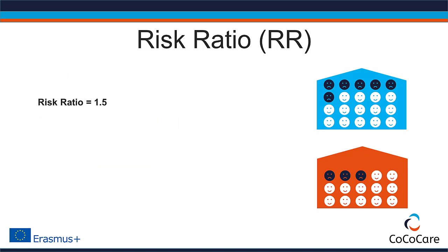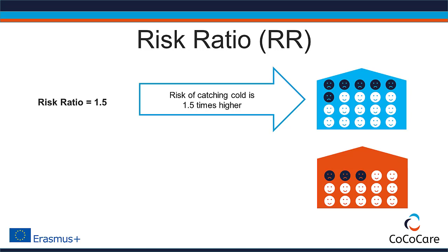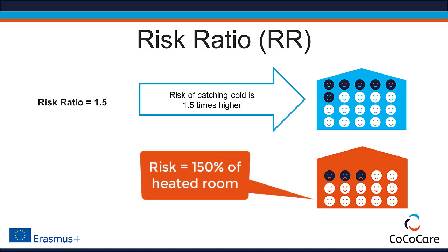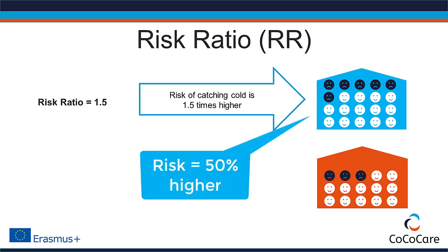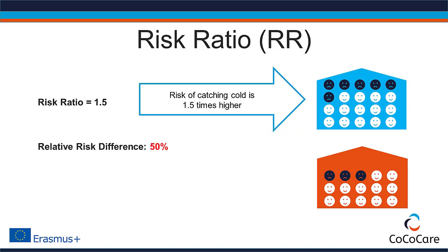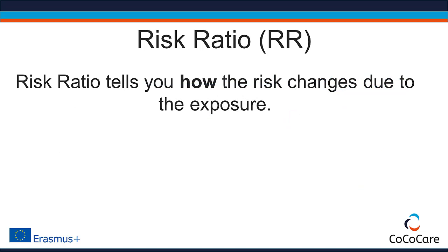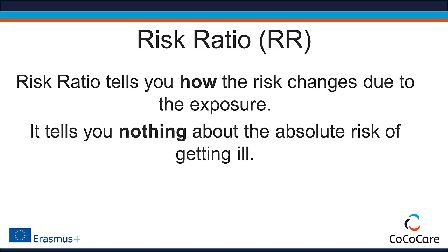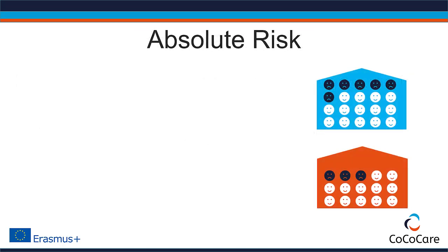That means the risk of catching a cold is 1.5 times higher for the children in the cold classroom than for those in the heated classroom. You could also say the risk is 150% of that of the heated classroom, or the risk is 50% higher — so the relative risk difference is 50%. A 50% higher risk sounds quite dramatic, but the risk ratio just tells you how the risk changes due to the exposure — it tells you nothing about the absolute risk of getting ill. Because it can make an effect look so big, the relative risk difference is often used to exaggerate benefits or harms. That's why you should always look at the difference in absolute risk as well.